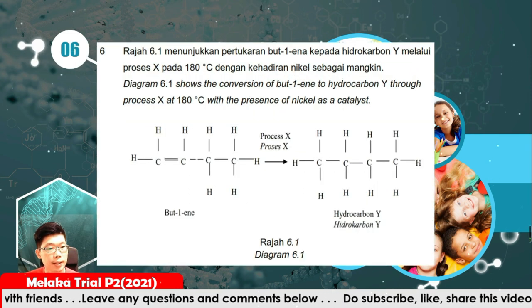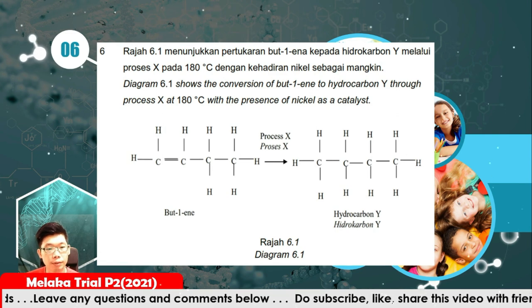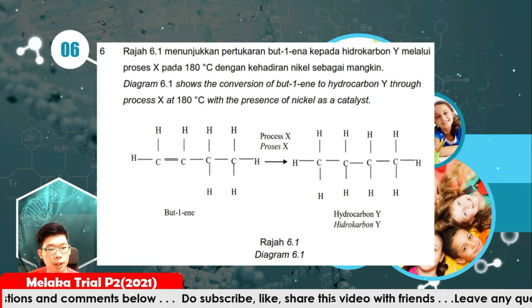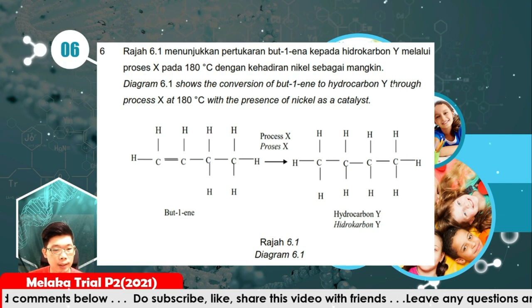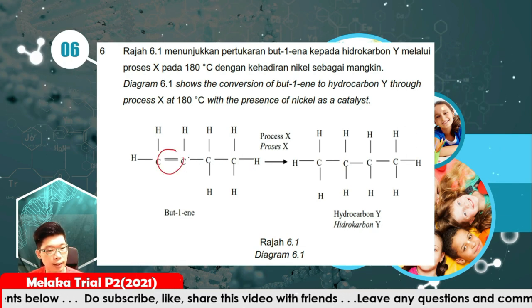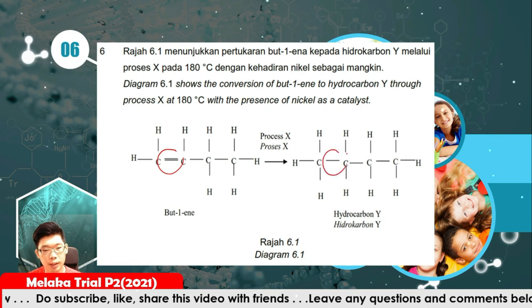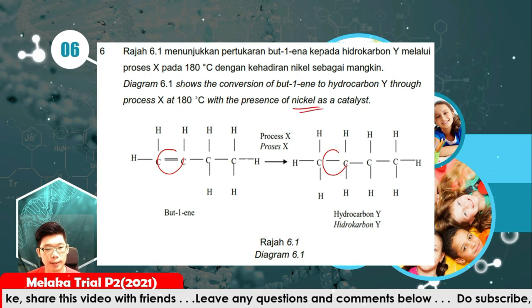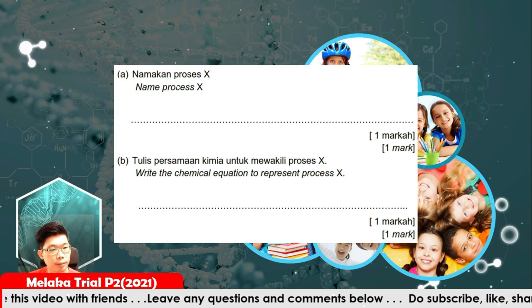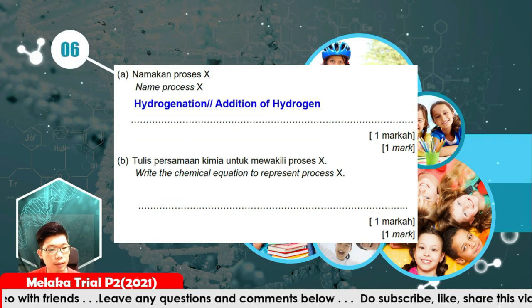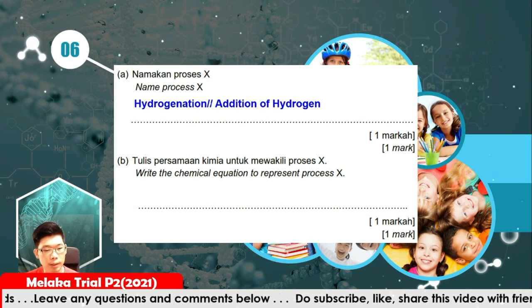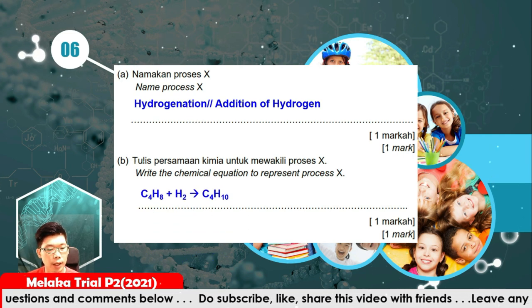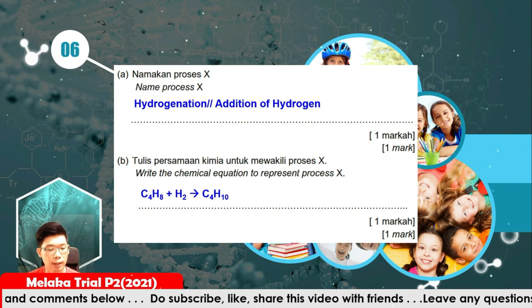Question number 6. A process diagram shows the conversion of 1-butene (C4H8) into hydrocarbon Y through process X at 180 degrees Celsius with nickel as a catalyst. Initially it has a carbon-carbon double bond; after the reaction there is no more double bond. This is called hydrogenation — addition of hydrogen. The chemical equation: C4H8 plus H2 produces C4H10, which is butane.